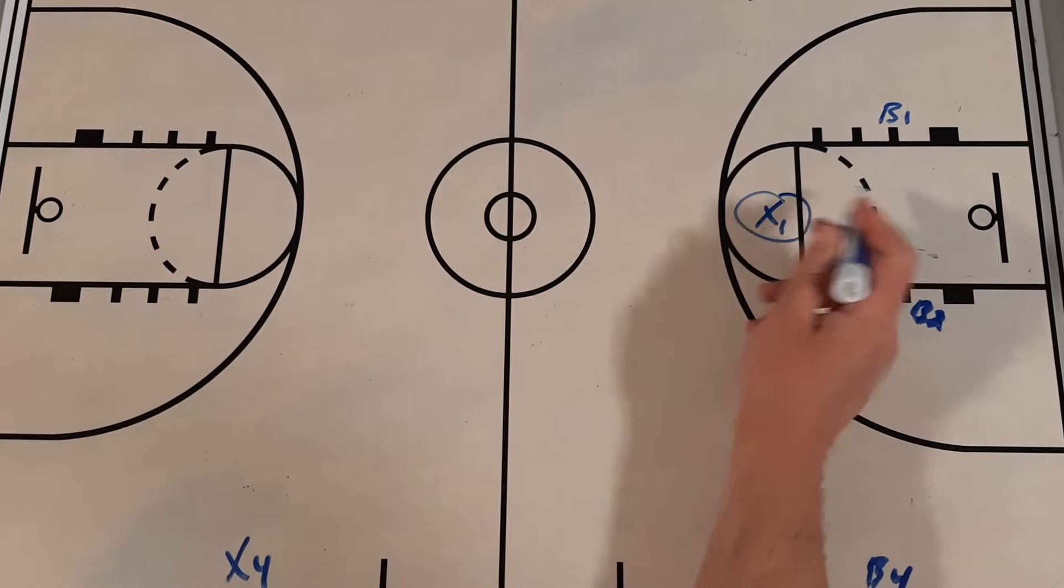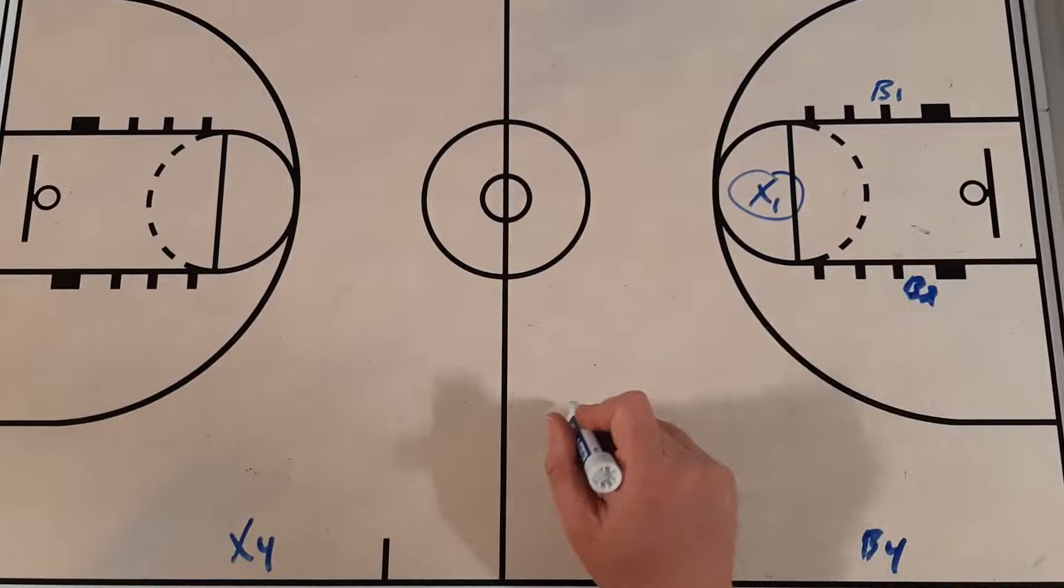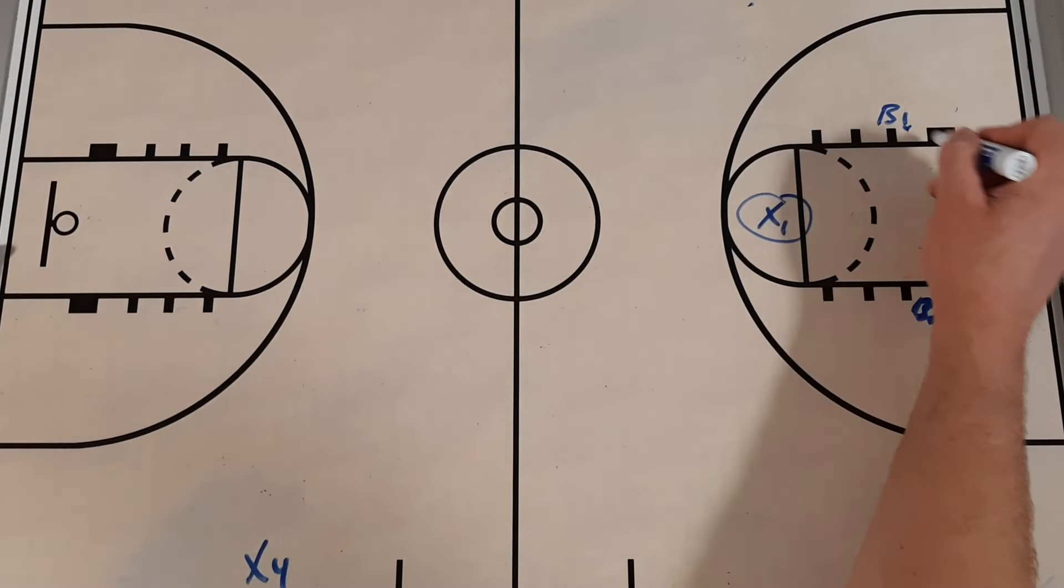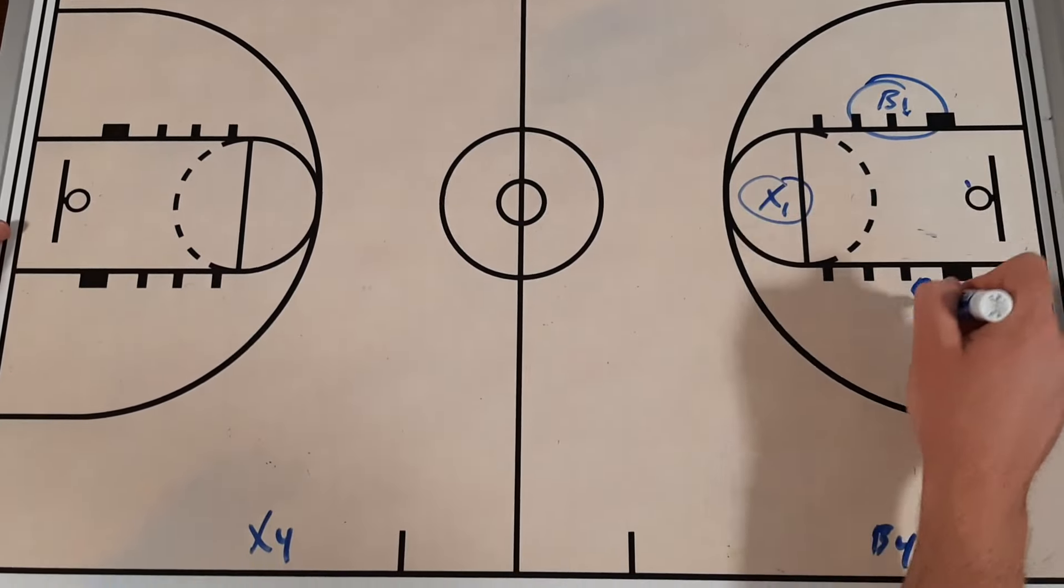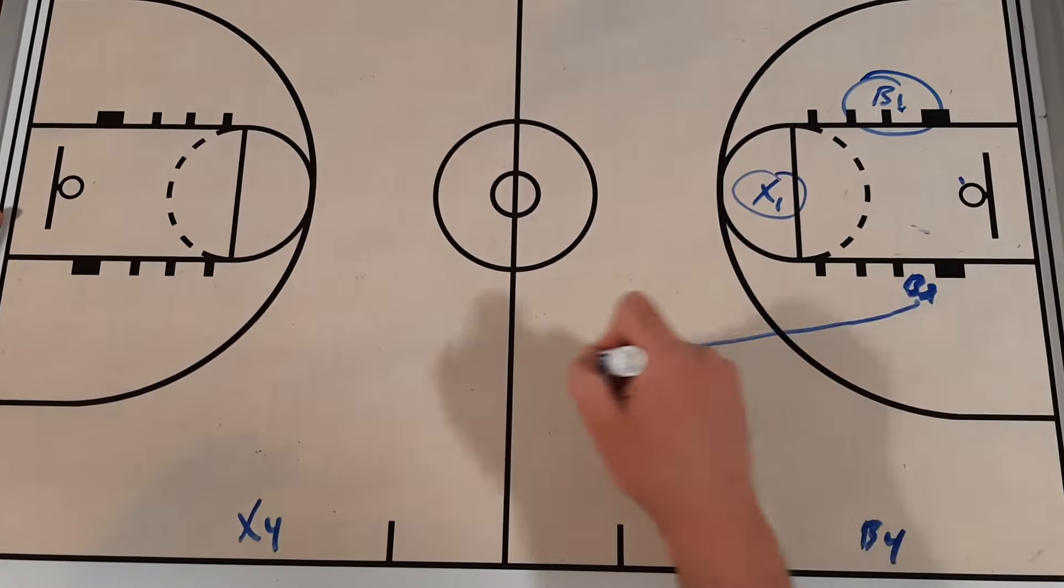I'm going to put our B2 player underneath. Either one of them gets the rebound, the other one's going to take off. So X1 takes the free throw. They make it, they get a point. They miss it, they don't get a point.